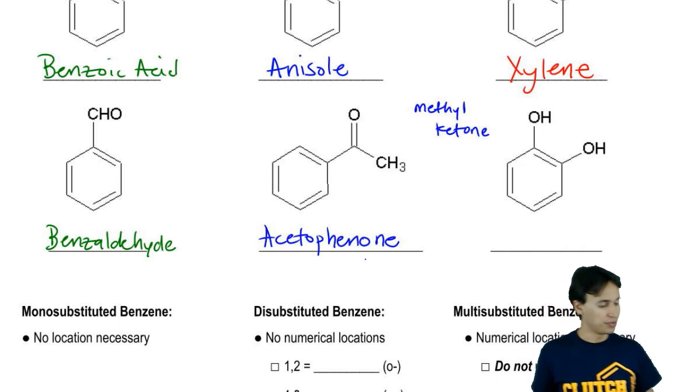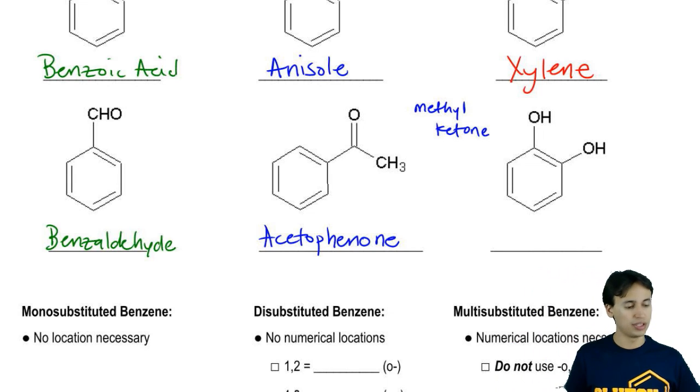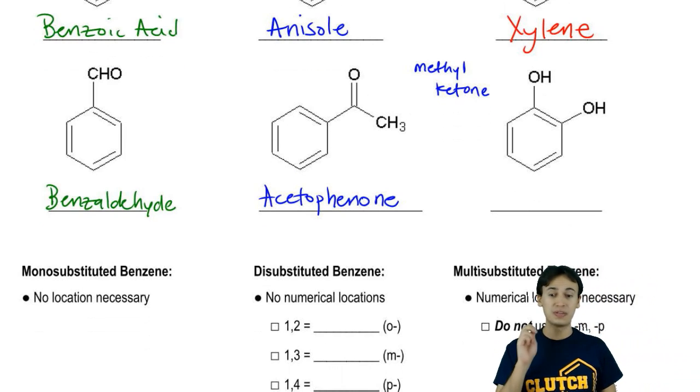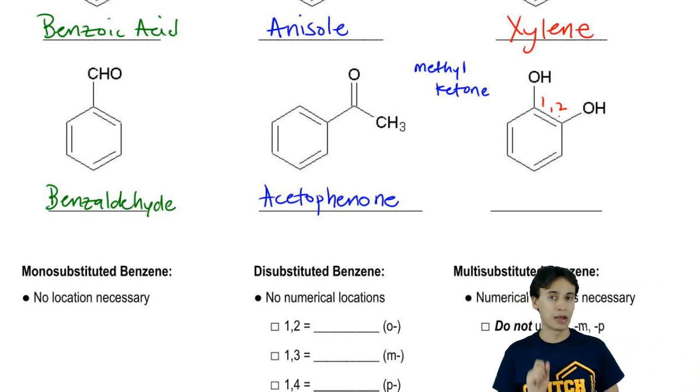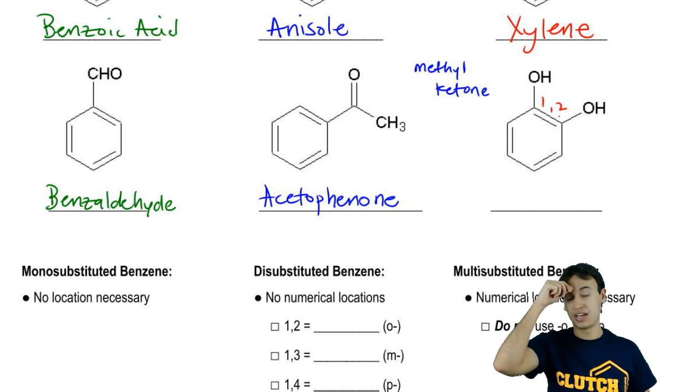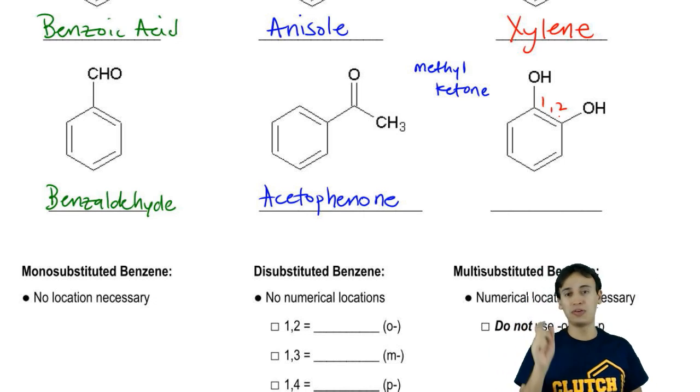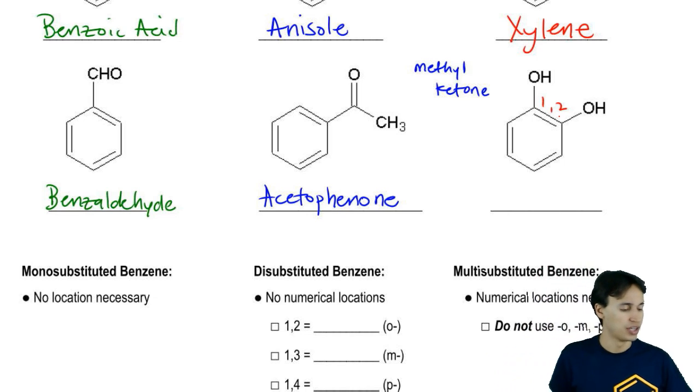And then finally, if you have two alcohols that are specifically in a 1-2 position next to each other, we're going to talk more about what those positions actually are. But if you have those alcohols right next to each other, that's called a catechol.